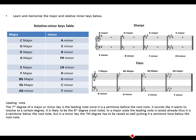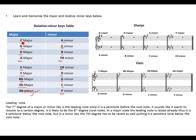Major and relative minor key pairs to memorize: C major — A minor; G major — E minor; D major — B minor; A major — F sharp minor; E major — C sharp minor; F major — D minor; B flat major — G minor; E flat major — C minor; A flat major — F minor. Counting 6 above each major key will give you its relative minor.